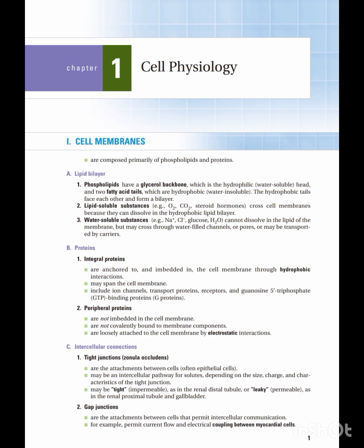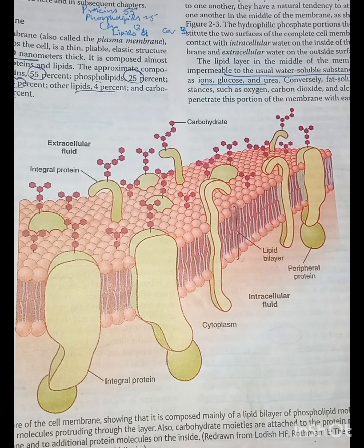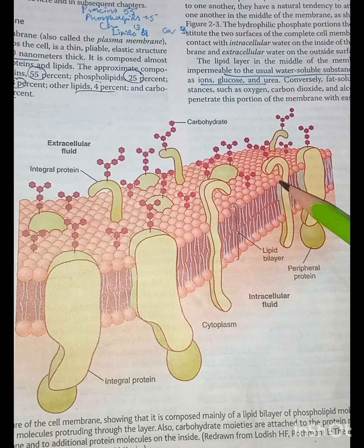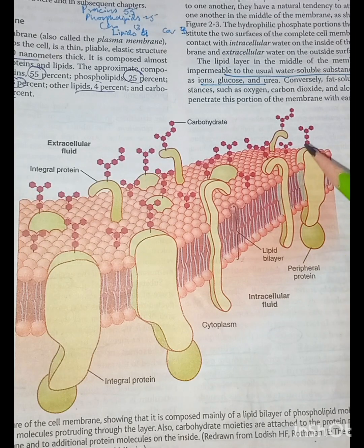I want to show you a picture from Guyton so you can easily understand what this lipid bilayer is. The phospholipids have a glycerol backbone and they have a head and tail. Looking at this diagram, the membrane is mainly composed of a lipid bilayer of phospholipid molecules, and here are the proteins dispersed in the lipid bilayer. Each phospholipid has a head and two tails, and understanding this difference will help us understand how different molecules can cross the membrane.